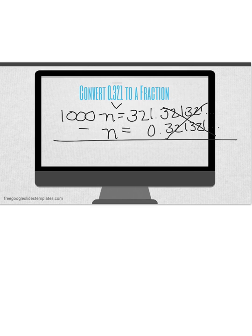On the right hand side, 321 minus 0 is 321. On the left side, 1,000n minus 1n is 999n.